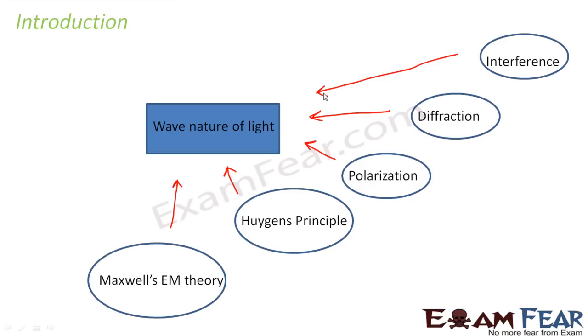Because how was the particle nature of light proved false? Because the interference phenomenon which was observed in Young's double slit experiment, the particle nature of light could not prove that experiment. So that is why people told that light is not of particle nature.